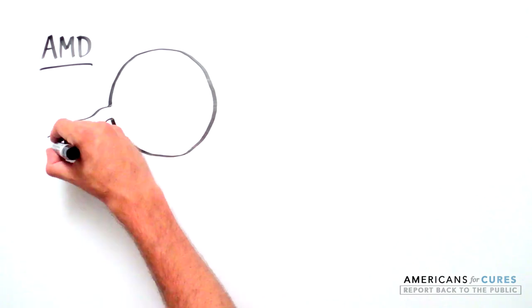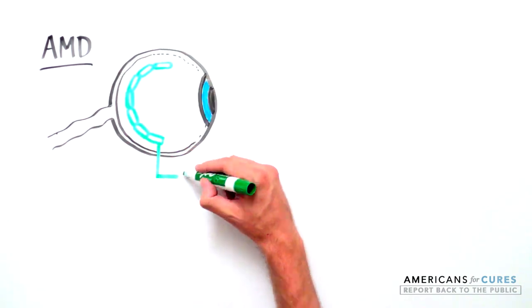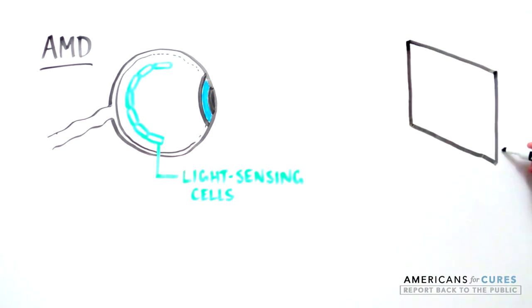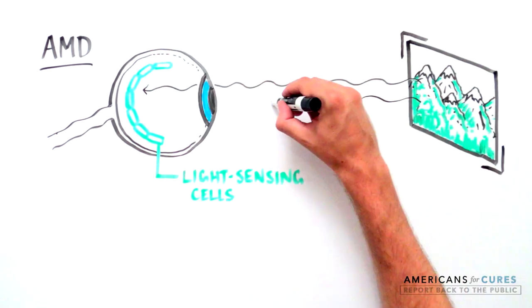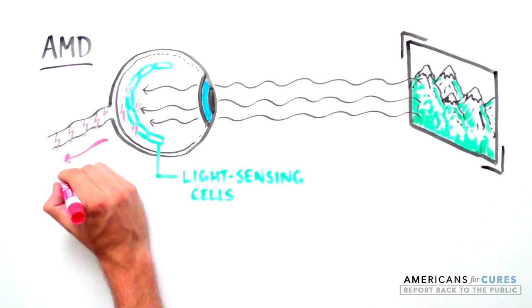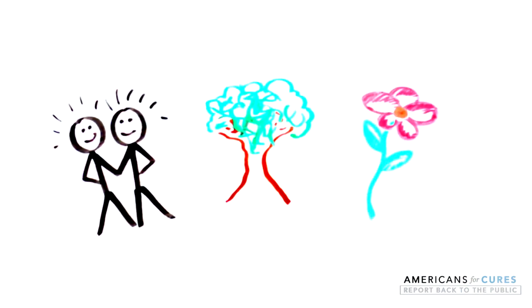AMD is caused by the degeneration of light-sensing cells in the eye, specifically in the part of the eye known as the retina. Normally, we are able to see because these cells in the eye take in the light from the world around us. Then, they send it in the form of electrical impulses to our brain, allowing us to perceive the images that surround us—the people, the trees, the flowers.